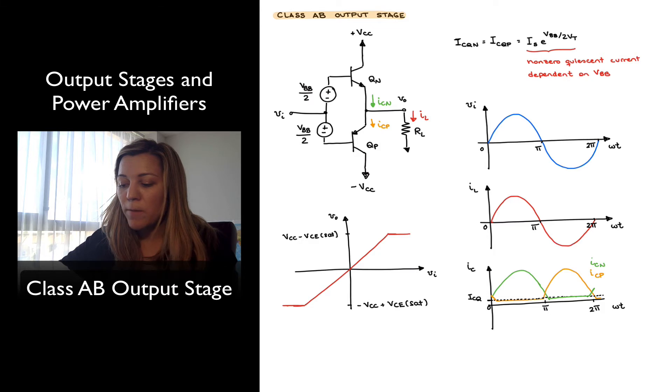which is going to be equal to, by the Shockley equation, IS, which is the saturation current, e to the VVB divided by 2 times VT. So that non-zero quiescent current is going to be dependent on VVB essentially. And we want VVB to be sufficient to turn on those base-emitter junctions.